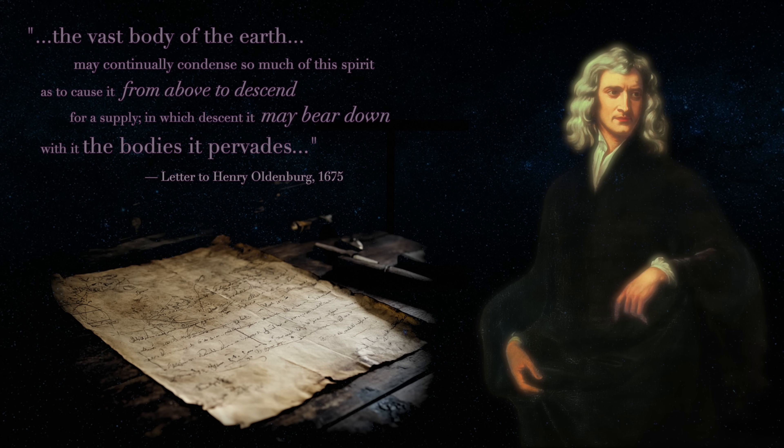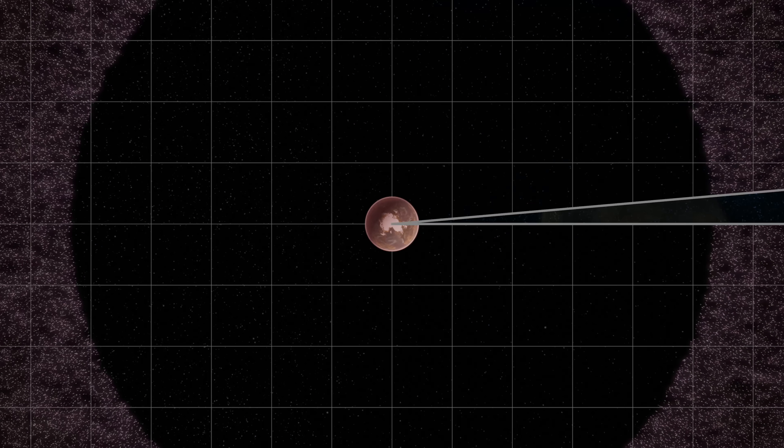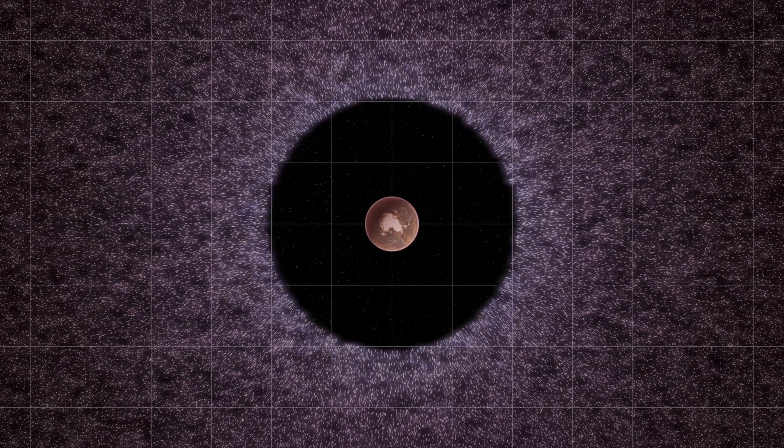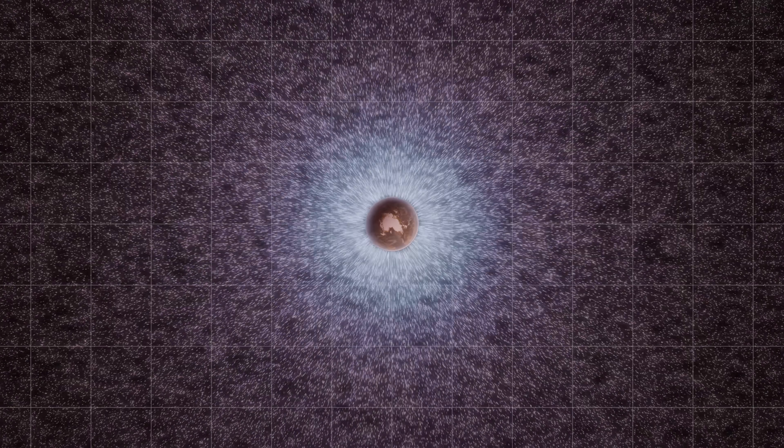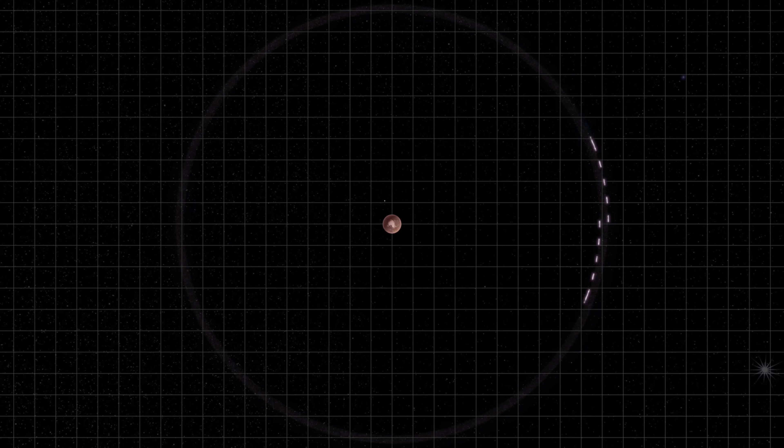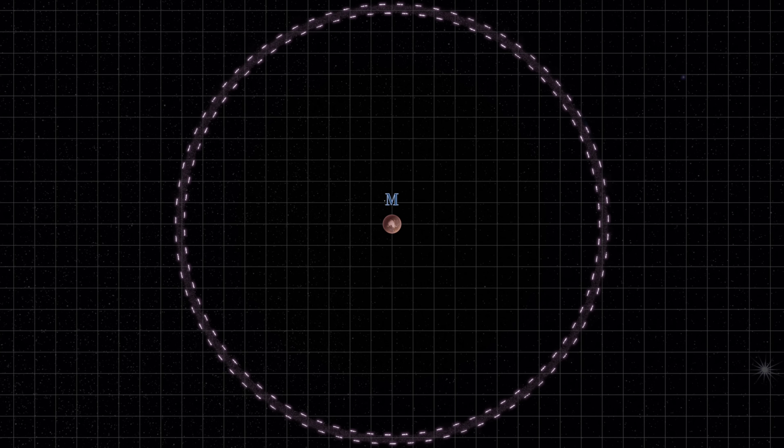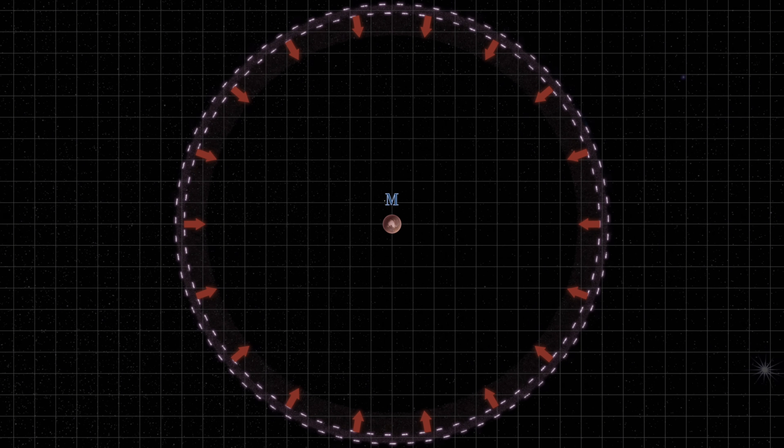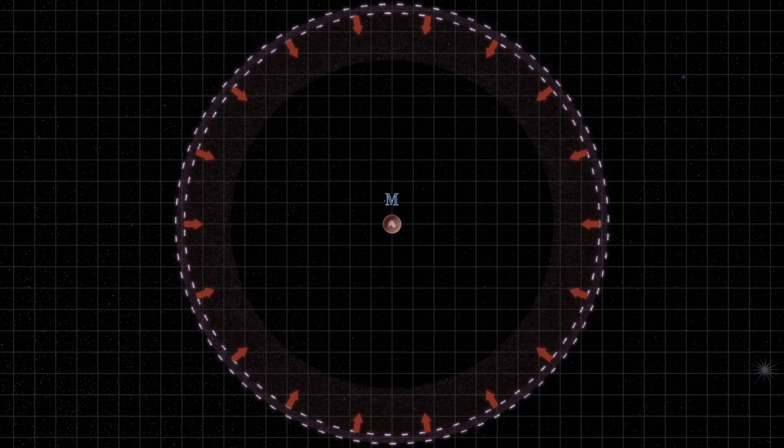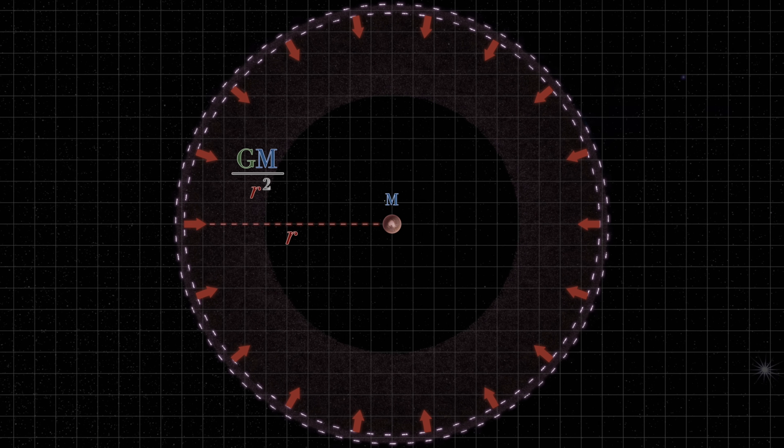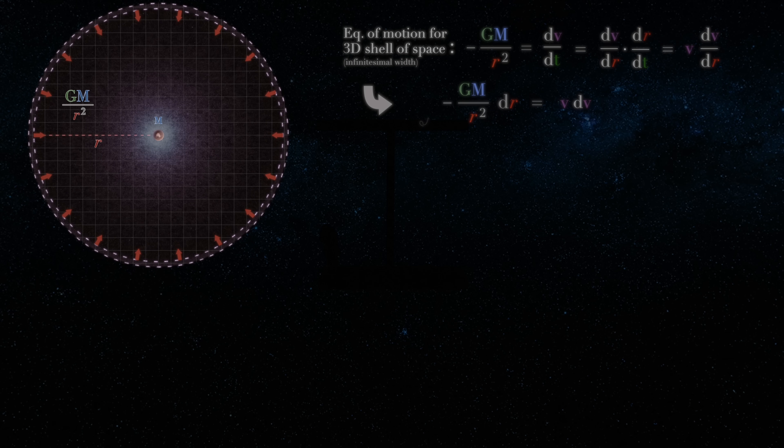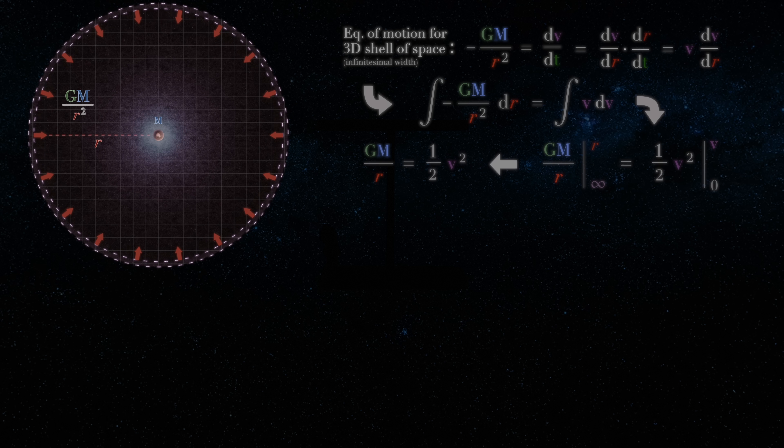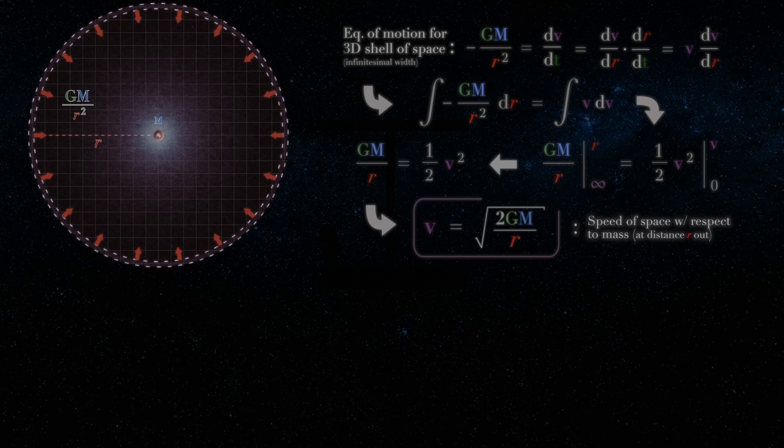Now, regardless of how it strikes your fancy, it should be apparent just how easily this model allows us to derive gravitational time dilation. For all that we need to posit is that space, very far out from a mass, is slowly captured by gravity and accelerated inwards at the traditional Newtonian rate. Then a little high school calculus shows that this space eventually acquires a speed of the square root of 2GM over r with respect to the mass as it flows radially in.